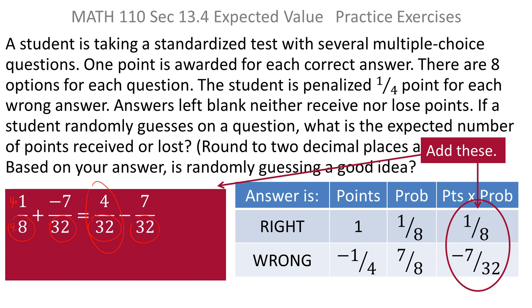So you end up with four thirty-seconds minus seven thirty-seconds, which of course is negative three thirty-seconds. And if you make that into a decimal rounded to two places, that comes out to negative zero point zero nine.